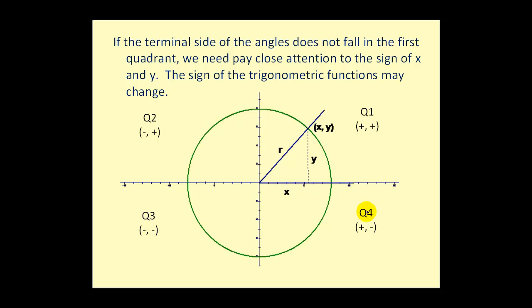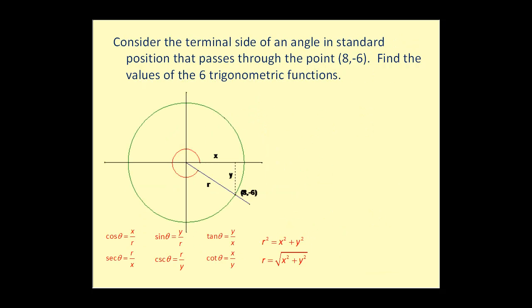In quadrant four, the x-coordinate is positive and y is negative, which affects the sine function, the tangent function, and their reciprocals. Here's an example: consider the terminal side of the angle in standard position that passes through the point (8, -6). Find the values of the six trigonometric functions.